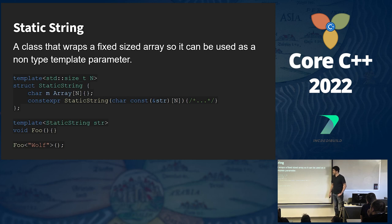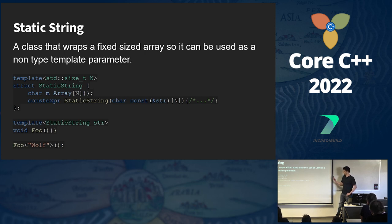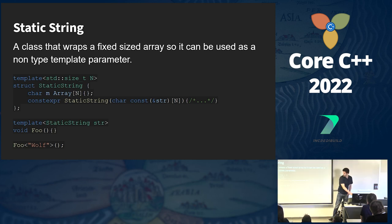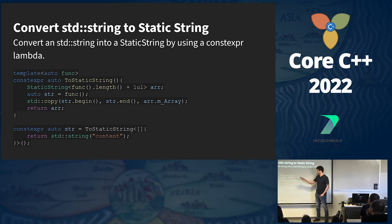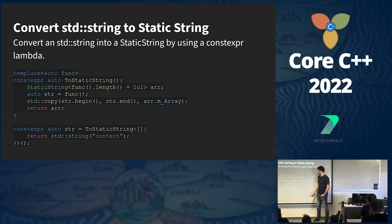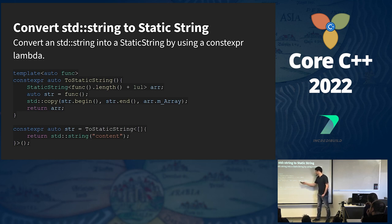For static strings: we use a class to wrap a fixed-size array so it can be used as a non-type template parameter. This is the class we use to represent our compile-time string of code. Because it has a constexpr constructor, we can call foo with a string literal and have a nice, expressive syntax. We also need a way to convert from std::string to static_string, which we do using a constexpr lambda. The function to_static_string takes a constexpr lambda as a non-type template parameter, calls it twice — once in a constexpr context to determine the size, and once to get the actual string — then copies from the regular string to the static string.